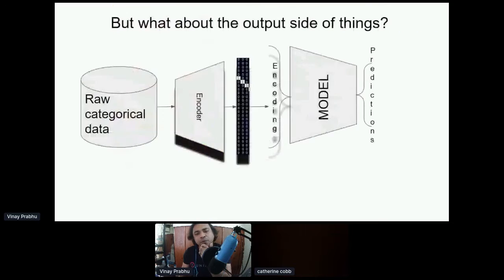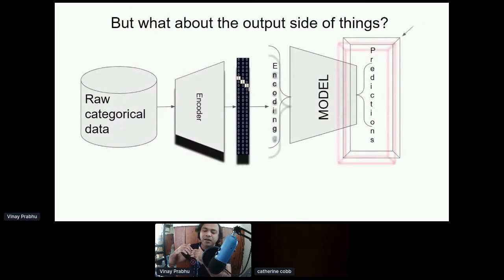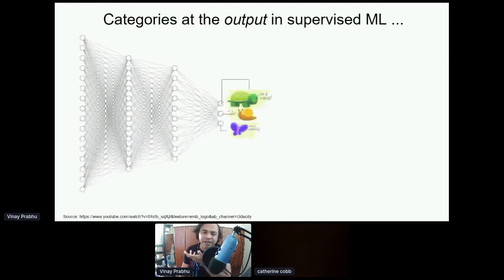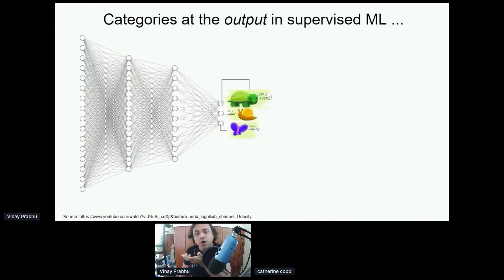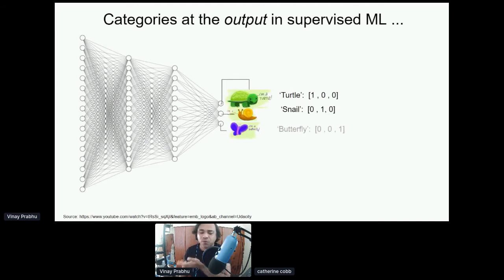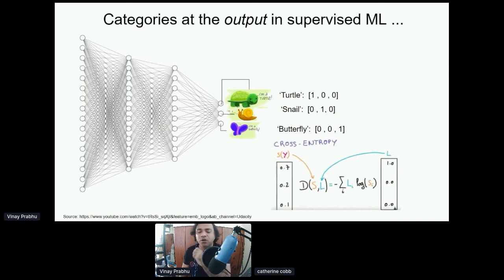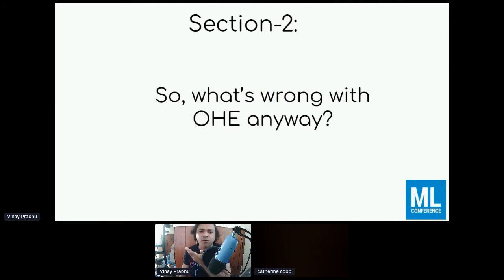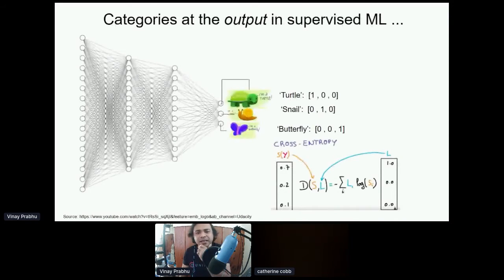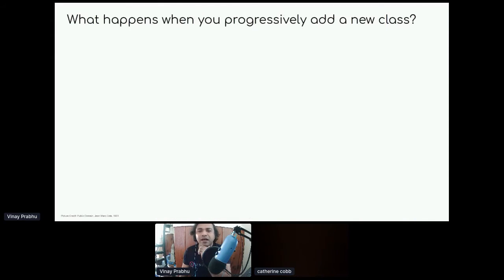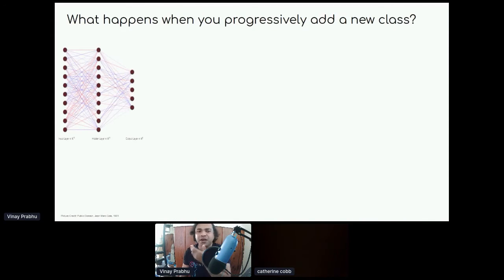What about the output side of things? What happens when the number of output classes explodes on the prediction side? Currently, what is stored in all machine learning tutorials on Coursera or elsewhere is that you have three output nodes if you have three categories, each represented by one-hot encoded vectors, and then you throw in the categorical cross-entropy loss and train your neural network. So what's wrong with this approach? Let's see what happens when we progressively introduce new classes — you have five classes, a two-layered neural network, and you introduce a new class.